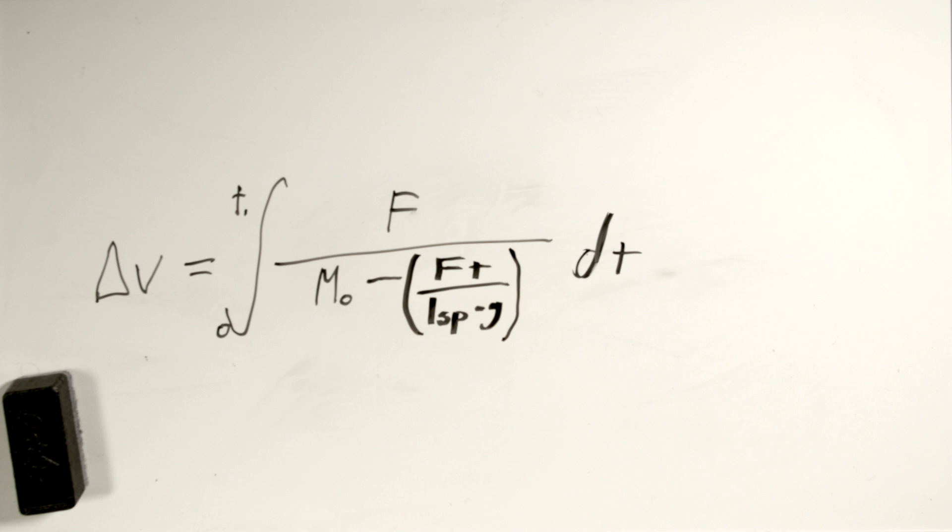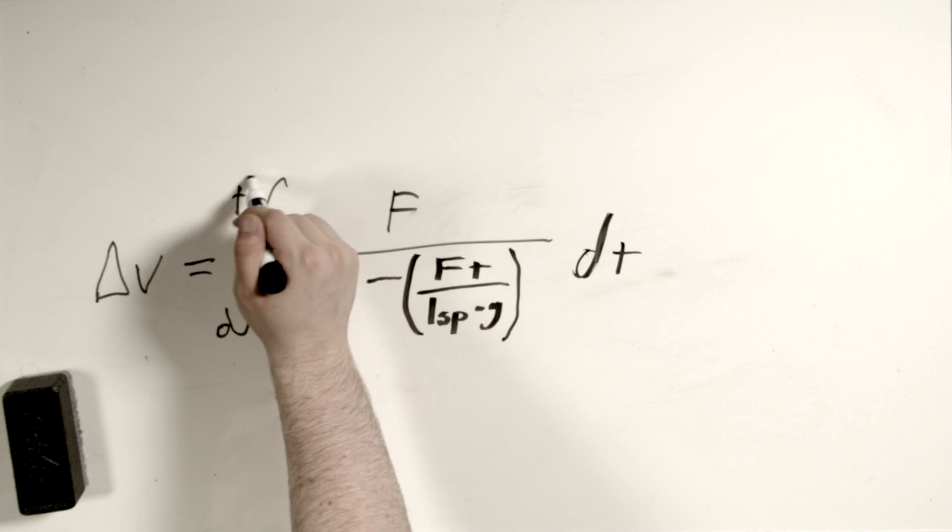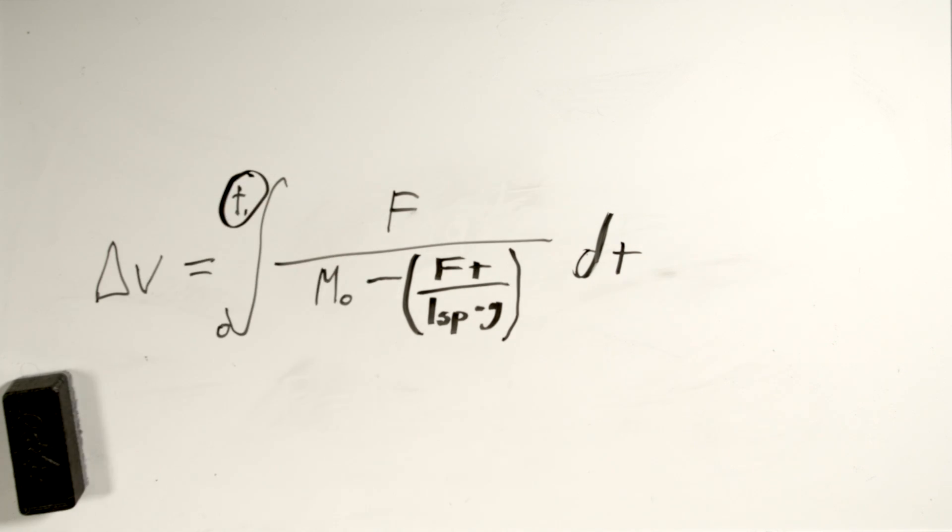Now we've got a formula that will tell us how much mass we are going to lose for every second that we are burning at max thrust. We can go ahead and take this bit and plug it into our original equation. So here is our nice and simple and happy equation that will give us the delta V for a particular time range. Now this is kind of cool because it means that we could plug in, if we had a known time, we could say how much change in velocity are we going to get if we burn for exactly three seconds. That's not what we're trying to do though. We want to solve this. We want to solve for this upper bound.